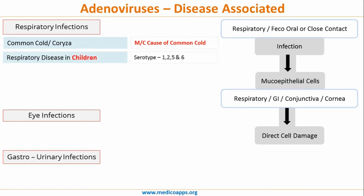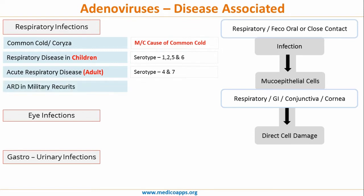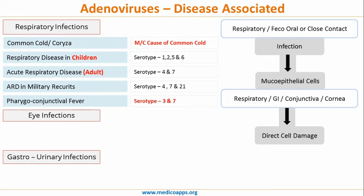Respiratory disease in children is associated with serotypes 1, 2, 5, and 6. Acute respiratory disease in adults involves serotypes 4 and 7. Acute respiratory distress in military recruits involves serotypes 4, 7, and 21. Pharyngoconjunctival fever involves serotypes 3 and 7.